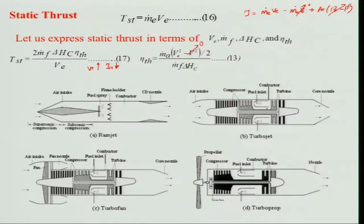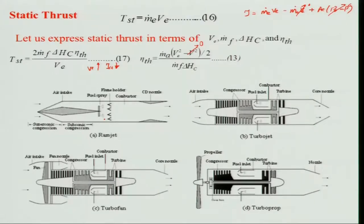However, with higher thrust from higher exit velocity, you can move at a faster speed since flight velocity will be higher — so it is a compromise. The turbo-fan engine provides a middle value between turbo-jet and turbo-prop. For a ram-jet engine, you cannot get static thrust — it is impossible. We will answer why when we discuss ram-jet engines.